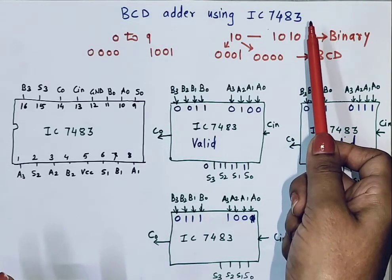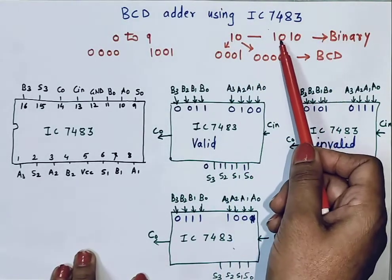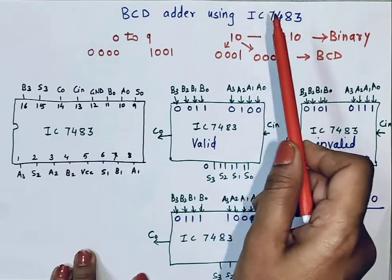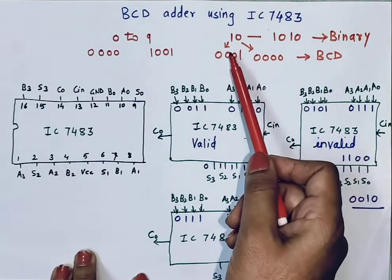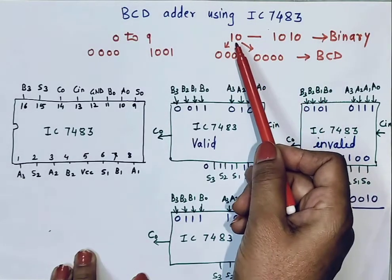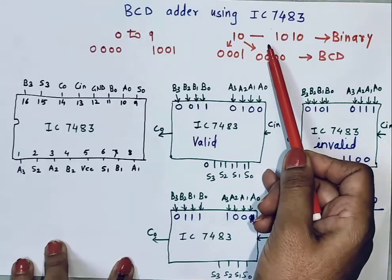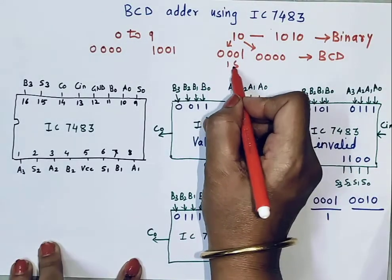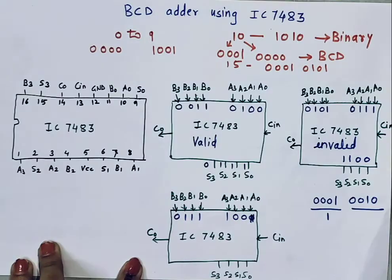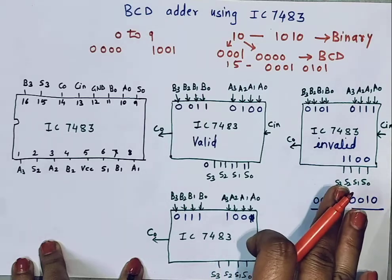IC 7483 is a 4-bit fast binary adder IC. The binary equivalent of 10 is 1010, whereas from 10 to 15 we are talking about 4-bit numbers. The BCD equivalent of 10 is 0001 0000 — for 2 digits we need to write binary equivalent of 2 separate digits. Like for 15 it is 0001 for 1 and 0101 for 5. So after 10, BCD numbers and binary numbers are different — the representation is different.